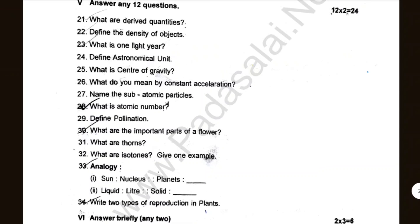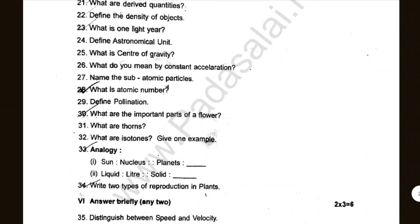Define the following: density of objects, light, astronaut, unity, center of gravity, constant acceleration, atomic particles, atomic number, pollination, important parts of flowers, stamens, isotopes, reproduction in plants.